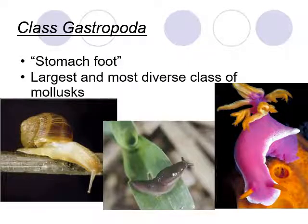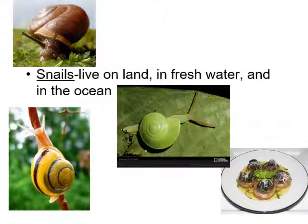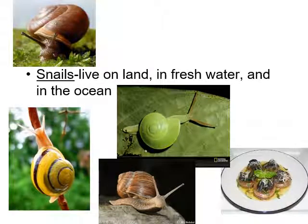Our first class of mollusks is Gastropoda, which means 'stomach foot.' These are the largest and most diverse class of mollusks, including all snails, slugs, and the colorful nudibranch. Snails can live on land, in fresh water, and in the ocean. Down towards the bottom right you can see a plate of cooked snails called escargot — never had the chance to try it, but it is a delicacy in some places. Maybe some of you will be adventurous enough to try it at some point — it'll probably taste like chicken.